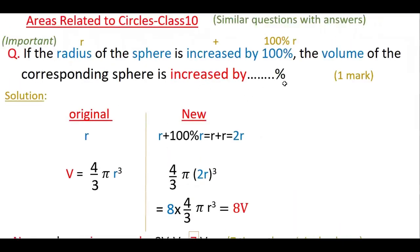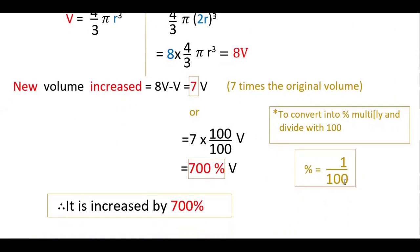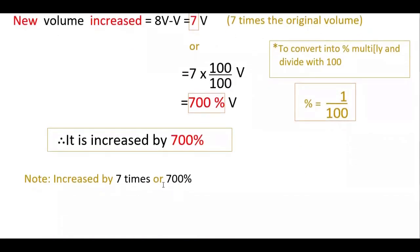But here we have to find the answer in percentages. If you want to convert any number into percentages, you multiply and divide by 100. Then 7v can be written as 7 times 100 by 100 times v. Since percentage means 1 by 100, taking that out separately gives 700 percent of the original volume. So the volume is increased by 700 percent. You can write increased by 7 times or 700 percent — if they ask how many times, answer 7 times; if they ask percentage, answer 700 percent.